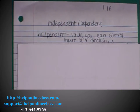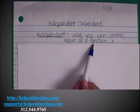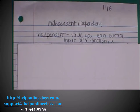The first one is independent. If you think about what that means in life, it's usually someone who's on their own or can take care of themselves. In math, an independent variable is a value you can control. Think of that as an independent person controlling their own life. It's also the input of the function, or the x value.